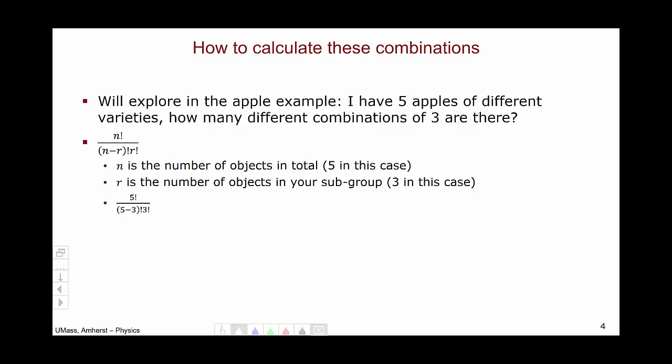Plugging the numbers into this formula, we see five factorial over five minus three factorial, three factorial, which is five factorial over two factorial, three factorial.